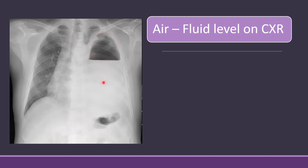Below that line there is a white area. This line separates an area of air and fluid — due to low density, air rises to the top and fluid settles at the bottom. This type of finding is only possible when there is both air and fluid in the thoracic cavity, and this air and fluid can be inside the lung or outside the lung as well.